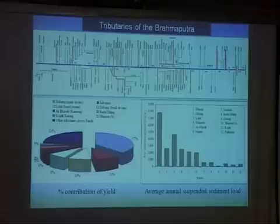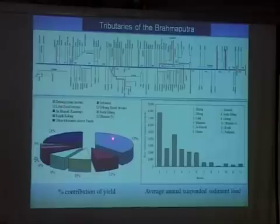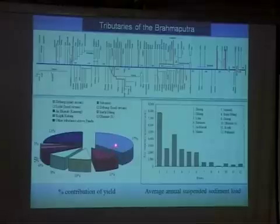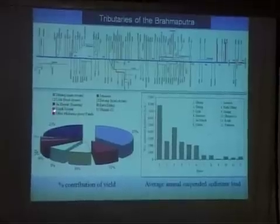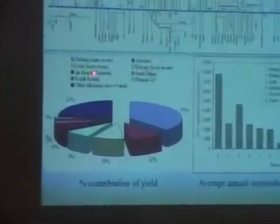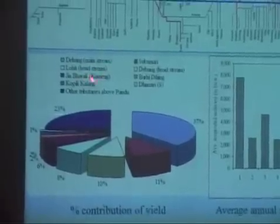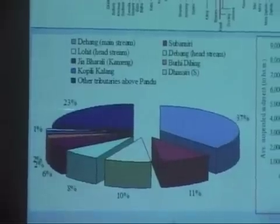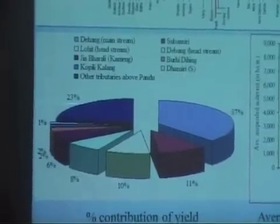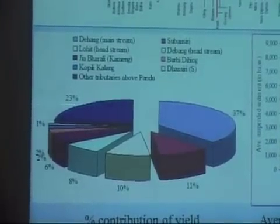There is a large distribution of major tributaries. Dihang, for example, has about 37% — Dihang is primarily the extension of Tsangpo, so Dihang is the main branch of Brahmaputra, supported by Siang, Lohit, and Dibang. Then there are rivers like Kameng, known as Jiabharali in Assam. Kameng is a river where a couple of hydropower projects are coming up, and it's a beautiful river where one of the very few places where you have the golden masheer available.